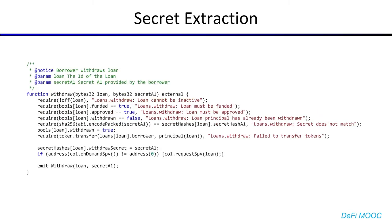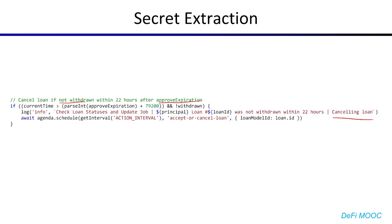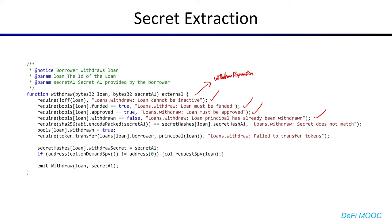If we look at how the withdrawal function works, we notice that while the loan can't be inactive and must be funded, approved, and not withdrawn, there's no requirement that the withdrawal expiration has been met. The loan can transition from the withdrawal state to the canceled state after 22 hours, but there's no enforcement that the loan cannot be withdrawn after transitioning into the canceled state. This means we can act as a frontrunner — wait until Bob is about to publish the cancellation transaction, observe the B1 secret in the mempool, and then quickly withdraw our collateral on Bitcoin while simultaneously withdrawing our loan on the Ethereum chain.